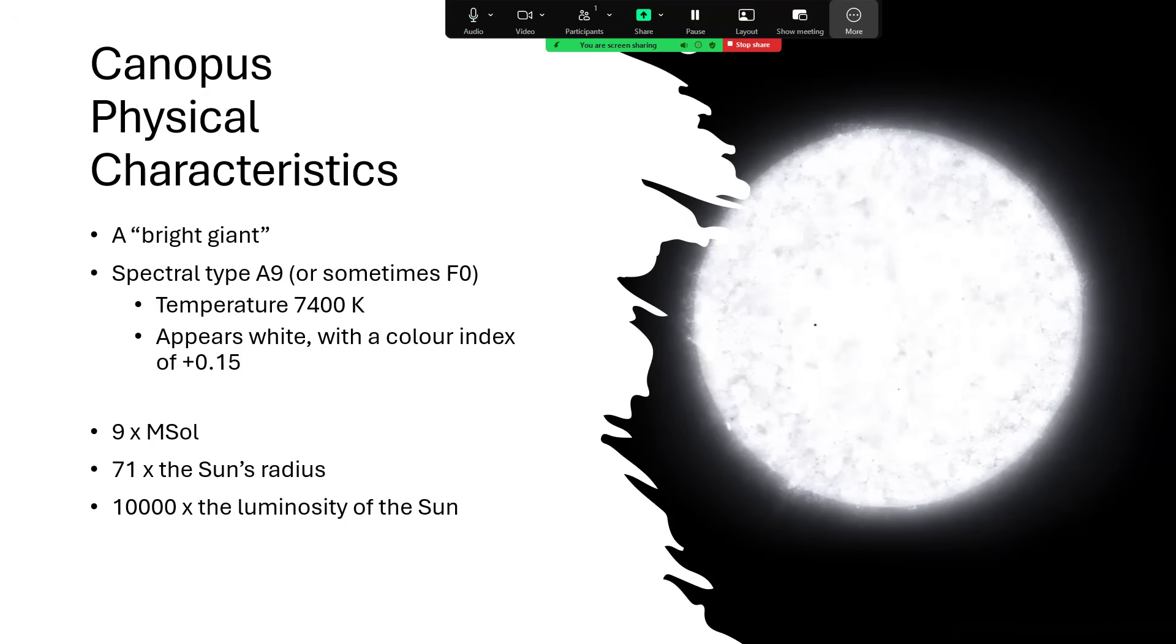It's bigger than the Sun, nine times the solar mass or thereabouts, maybe as much as 10, maybe as low as eight, depends which estimate you look at. And from interferometer measurements where telescopes have been combined to try and estimate the radius of it, we know it's 71 times the Sun's radius.